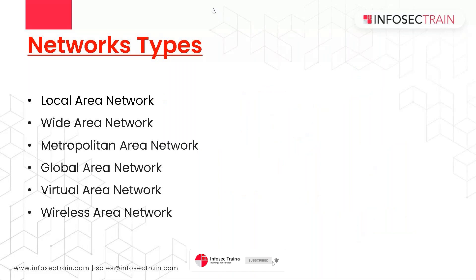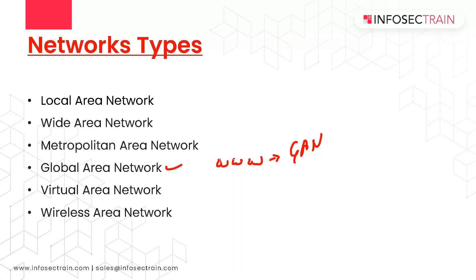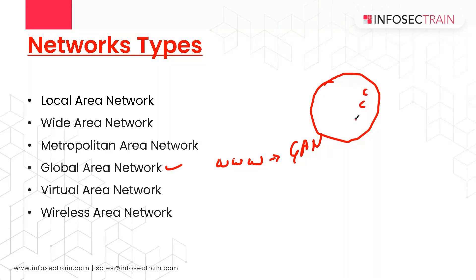After this we have GAN - Global Area Network - which is our worldwide web. The global area network is an intercontinental network spanning our entire globe, connecting devices and networks across different countries and continents, and enabling communication and data sharing between this huge network.